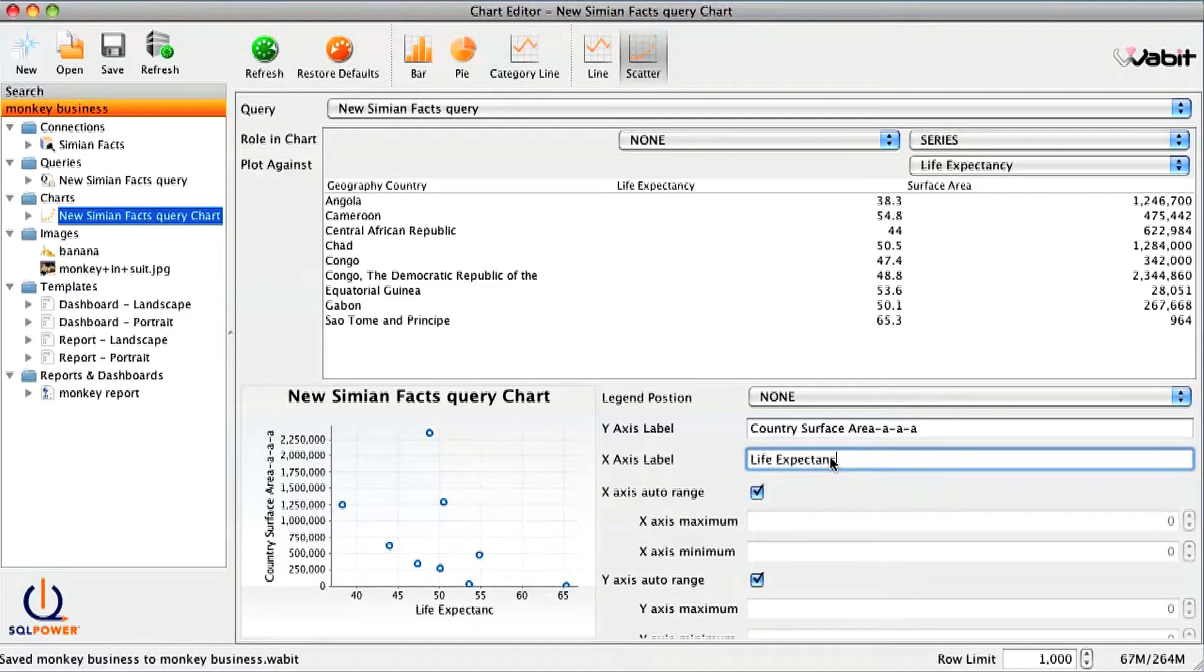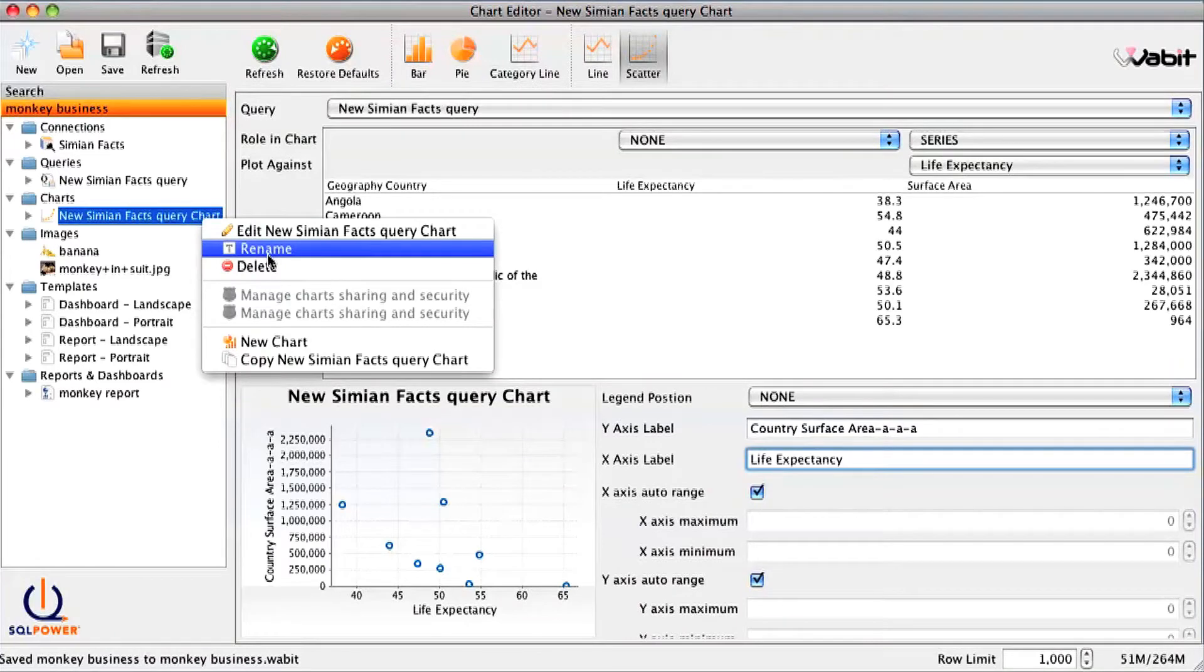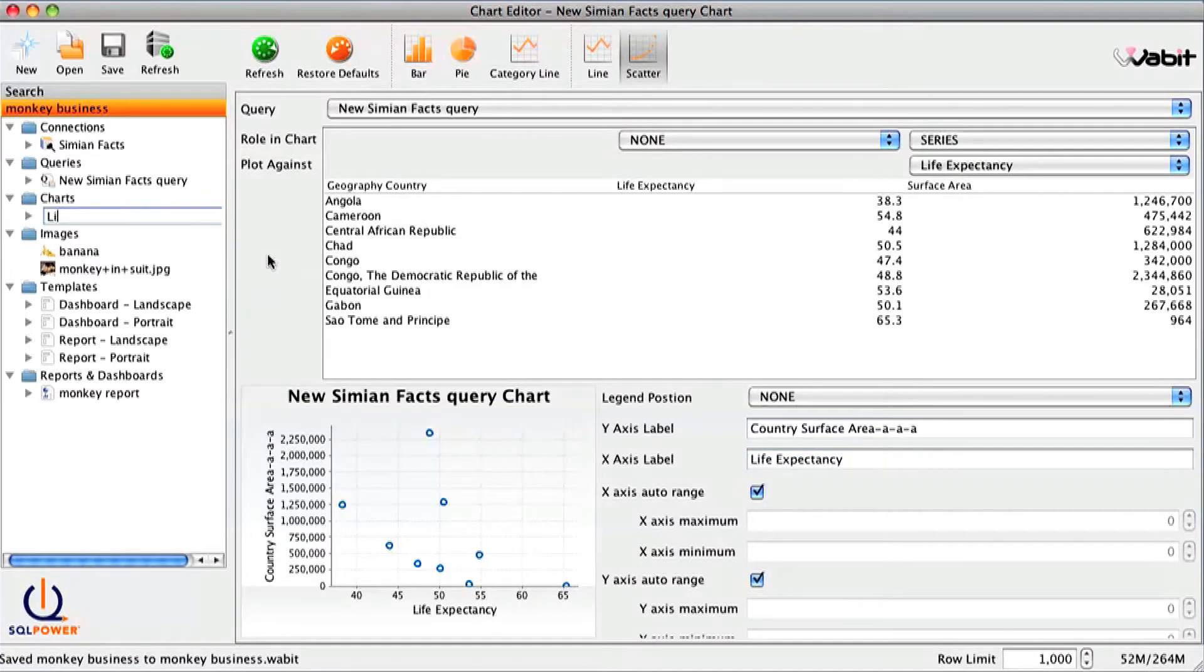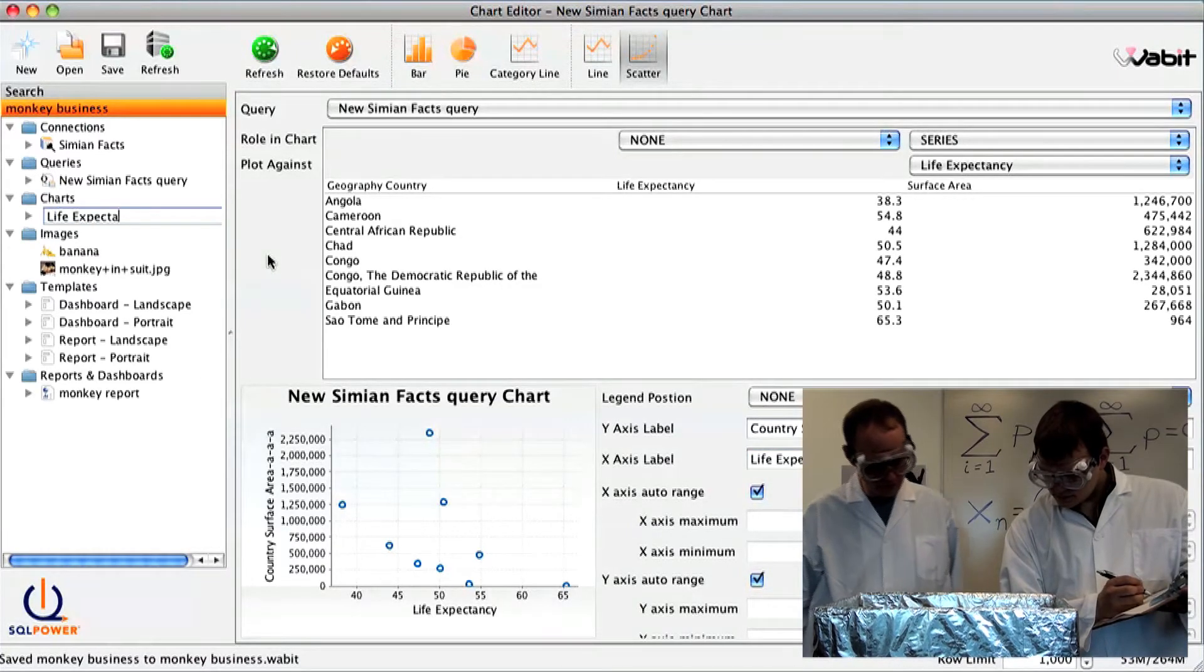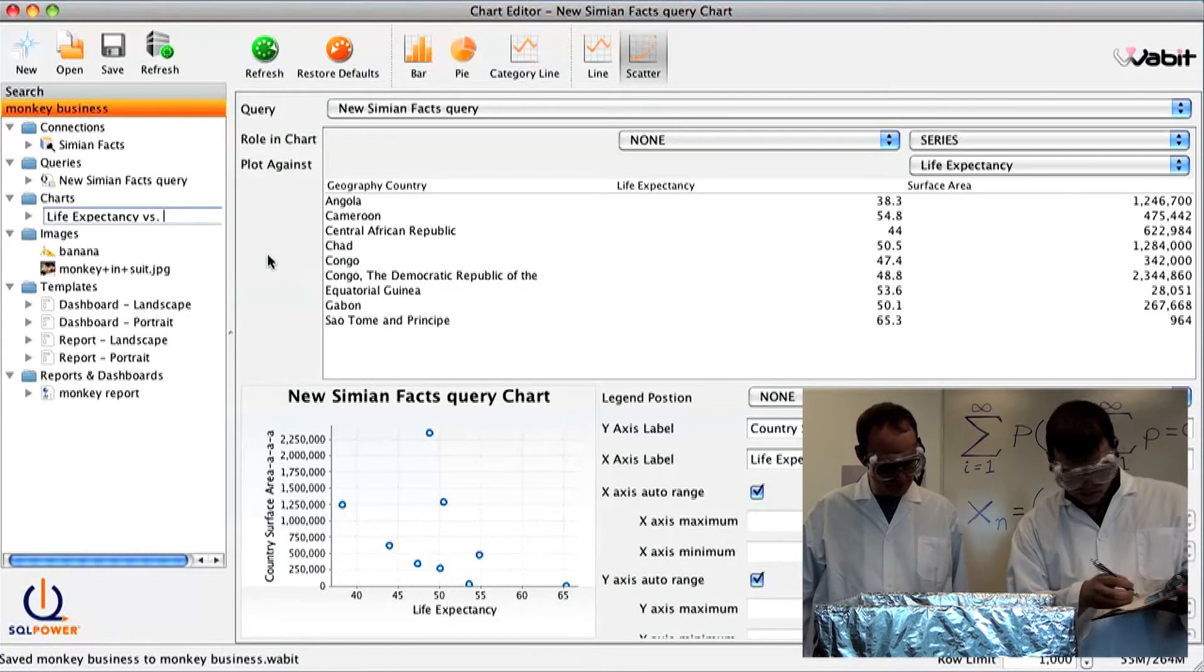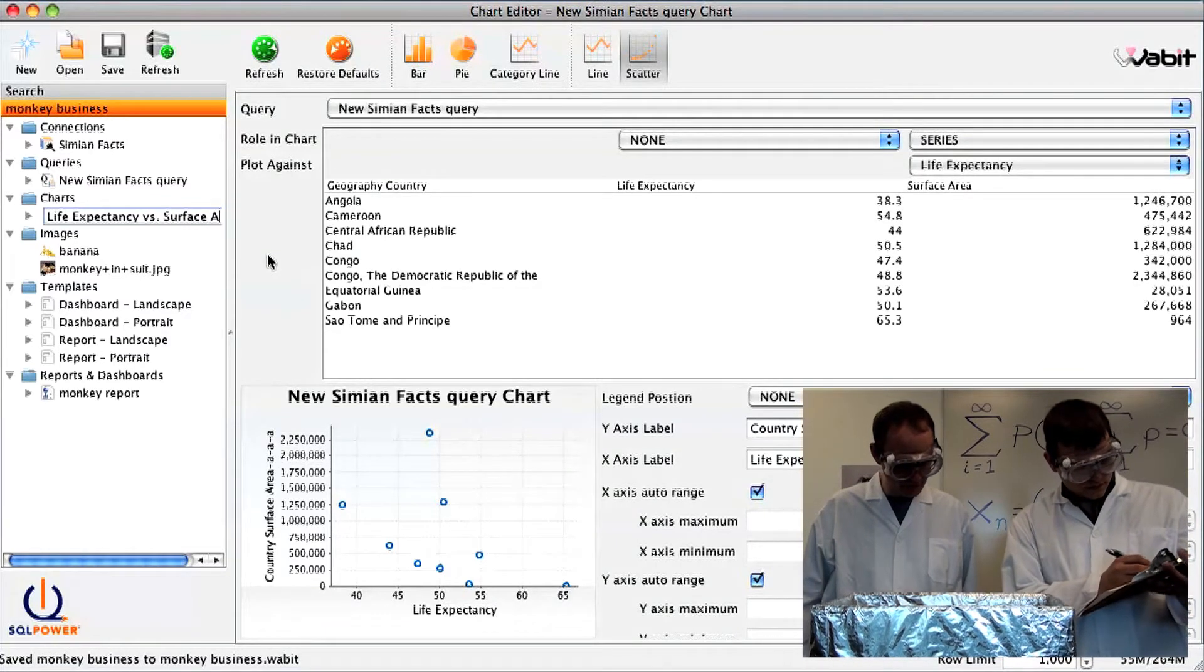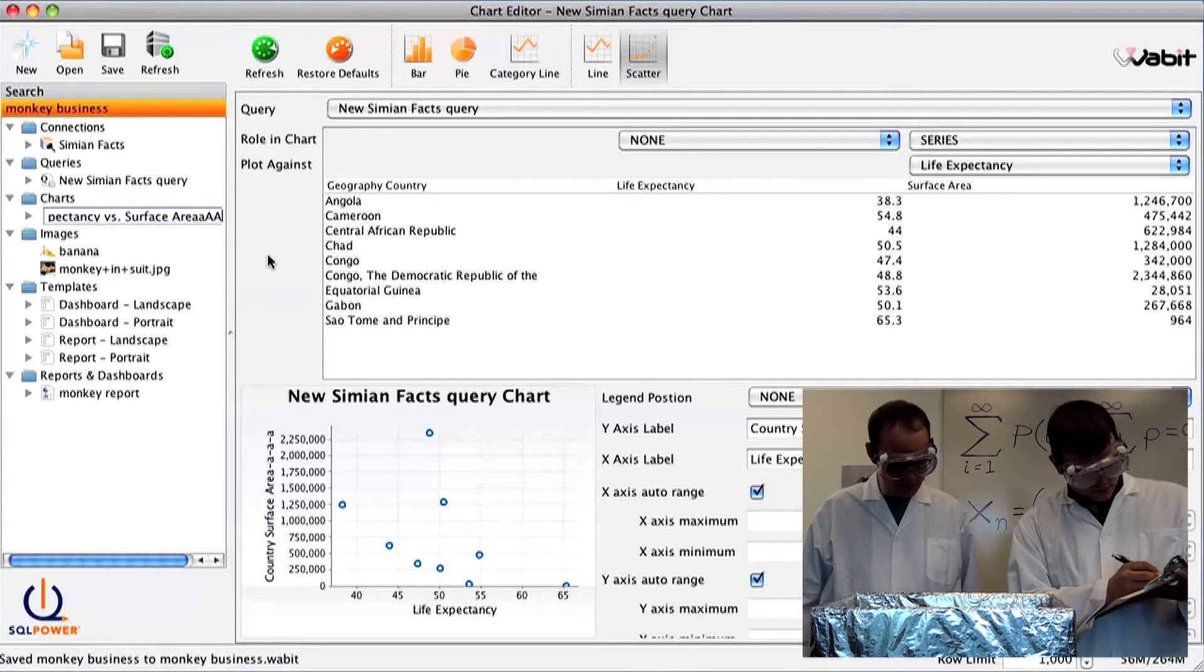Label's getting a little silly. I think our monkeys might be getting tired. No, no, this looks good. Life expectancy versus surface area. That's good. Yes.